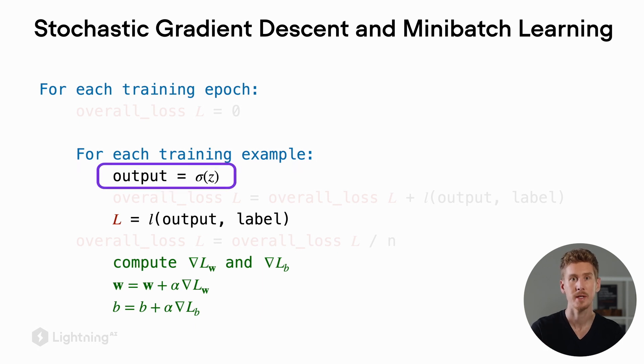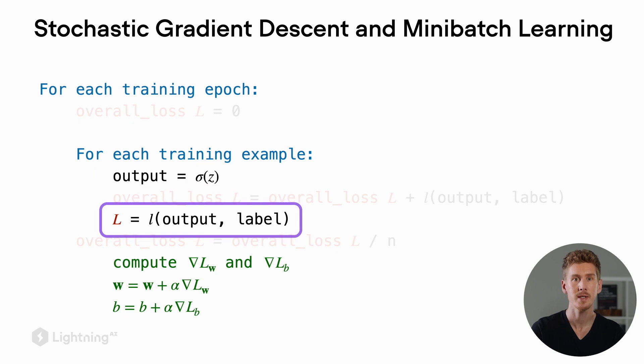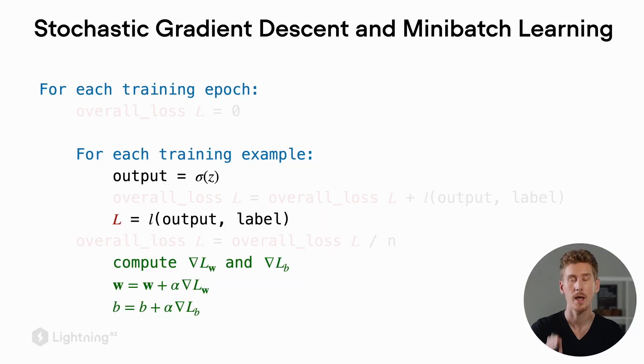We compute the loss between the output and the actual class label. In gradient descent we kept accumulating the loss over the whole training epoch before we computed the gradients.